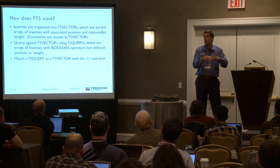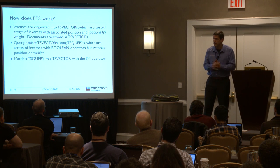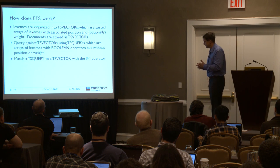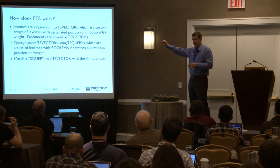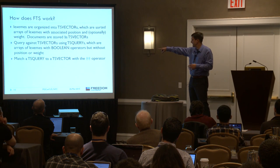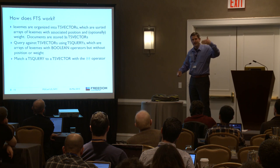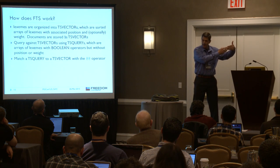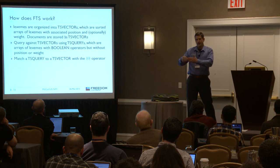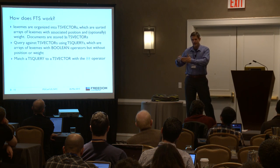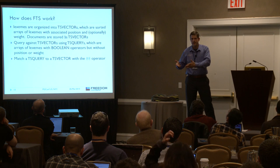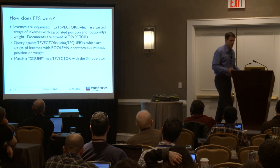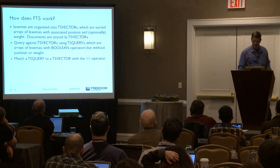Postgres has the @@ operator. That matches a TS query against a TS vector and gives me my result set. We'll show you some examples — it'll make more sense when you see it. We use the built-in function to_tsvector, which turns a text document into this TS vector. All the pieces are configurable, but by default they work pretty darn well. Applying Occam's razor — see if it works by default, and if it doesn't, add some razzle-dazzle.